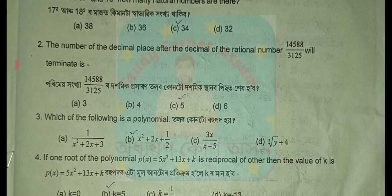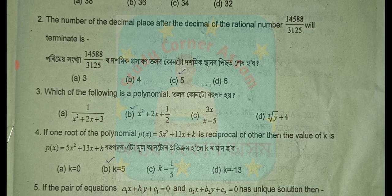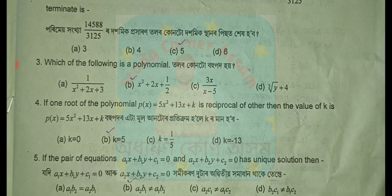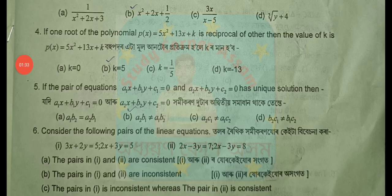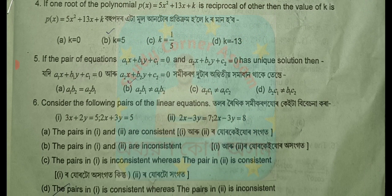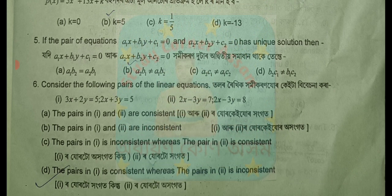Question number three: which of the following is a polynomial? Answer is option number two. Next, question number six — answer is option D.